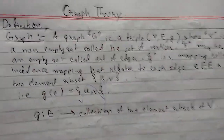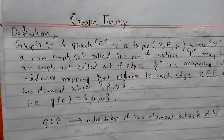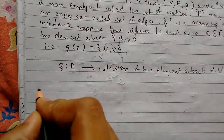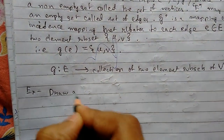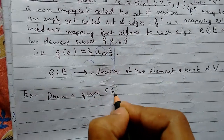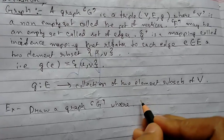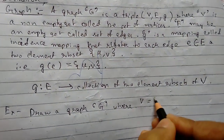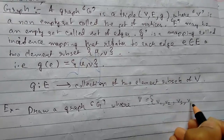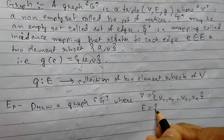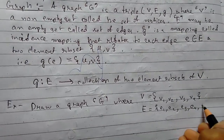So a graph will basically be a set of vertices and edges. Let us see by an example. We need to draw a graph G where the vertex set and edge set will be given. The vertex set is V1, V2, V3, V4 and the edge set is E1, E2, E3, E4, and E5.